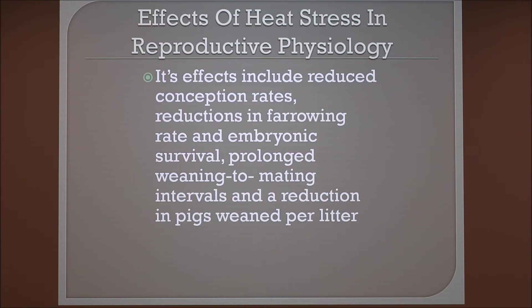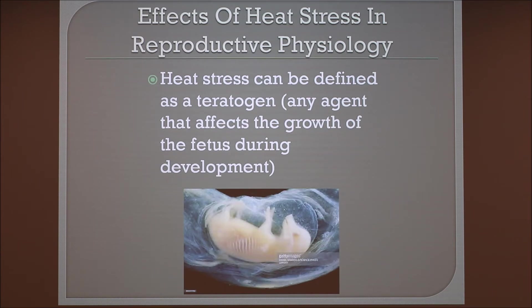Some of the effects of heat stress on reproductive physiology include a reduction in conception rates, reductions in farrowing rates and embryonic survival, prolonged weaning-to-mating intervals, and a reduction in pigs weaned per litter per year. With regard to embryonic survival, some argue that heat stress acts as a teratogen, which is any agent that affects the growth of a fetus during development.